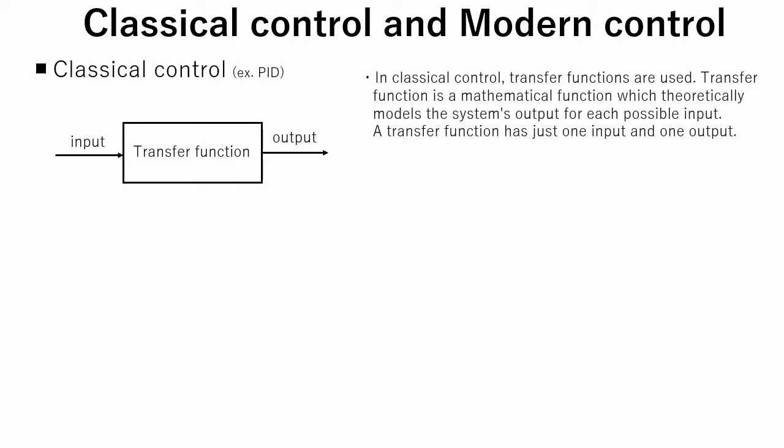Now let's talk about the difference between classical control and modern control. In classical control, transfer functions are used. A transfer function is a mathematical function which theoretically models the system's output for each possible input. A transfer function has just one input and one output.